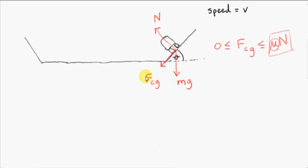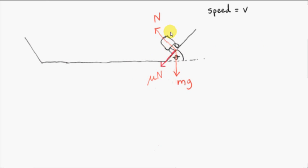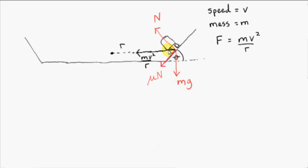Now let's suppose that the maximum friction force is acting on the car, so the ground is pushing on the car with the highest possible value, which is mu times N. The car is not in equilibrium — it's not sitting at rest. If it was, these three vectors would sum to zero. Since the car is moving with speed v in a circle of radius r, we know that the resultant force on the car points towards the center of the circle. We are assuming the car is moving with constant or uniform speed. The magnitude of the resultant force is mv squared over r.